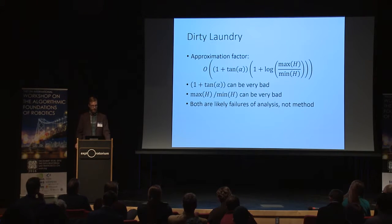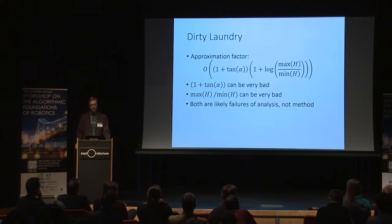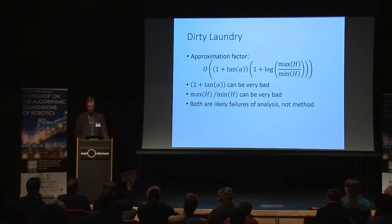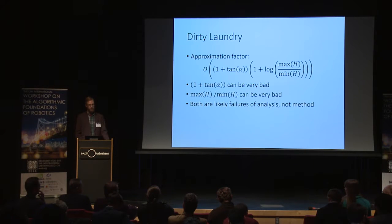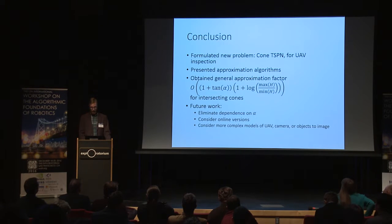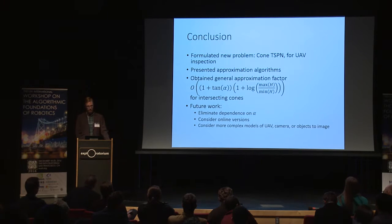Our approximation factor has a 1 plus tan alpha term, which can be very bad if you have a wide field of view, and the max H over min H term can also be bad if there are a small number of points to visit at very low altitude. However, I believe both can be improved without significantly changing the algorithm — the 1 plus tan alpha factor is likely a failure of the analysis, and a similar extension for very short cones might help the other term. In conclusion, we formulated the new cone TSPN problem for UAV inspection, presented approximation algorithms, and in future work we would like to eliminate dependence on alpha and consider online versions of the problem, as well as more complex models of the UAV, camera, or objects being imaged.